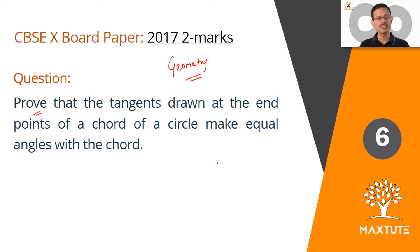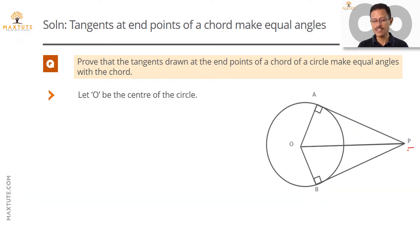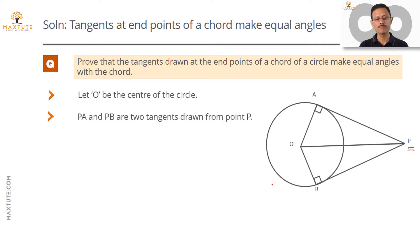First, draw the diagram. Let O be the center of the circle, let P be the external point from which we are drawing two tangents. Let these tangents be PA and PB, and let OA and OB be the radii.